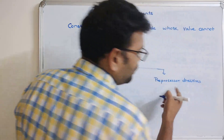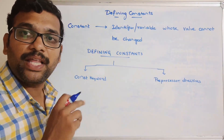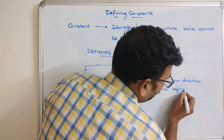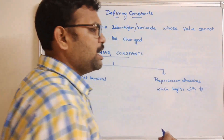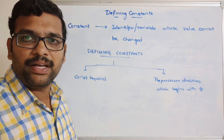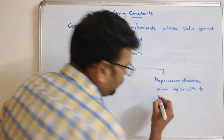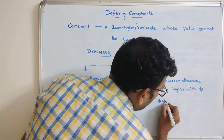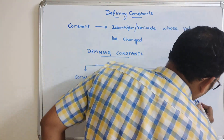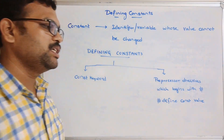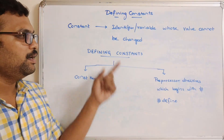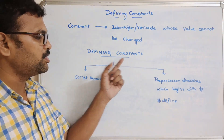The second way is by using preprocessor directives. Preprocessor directives are statements that begin with a hash symbol. For example, we use #include to include header files. Similarly, we can define a constant using #define followed by the constant name and its value. By using #define we can define constants.